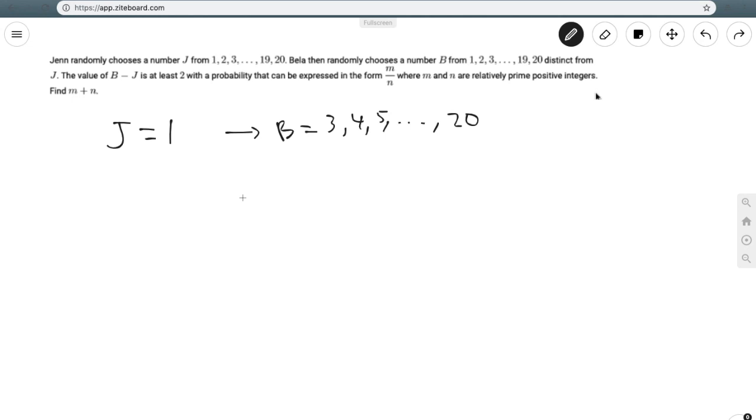Now with j equals 2, we see that we have one less case, because we cannot have Bella picking 3, since 3 minus 2 is 1, which is not at least 2. This goes up to 20. Now we see a pattern here.